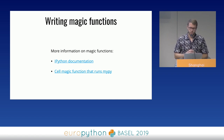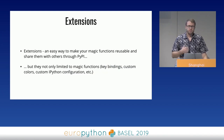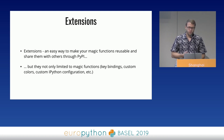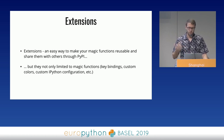Creating cell magic functions is pretty similar, and you can even create a function that works as both cell and line magic. If you want to learn more, the IPython documentation has simple examples, and I also wrote a short step-by-step guide on creating a cell magic that runs the mypy type checker on a block of code. Creating magic functions is easy, but to run our magic function we had to copy and paste code into IPython. If you want to use it often, you'd have to paste it each time you start a new session, which is inconvenient. So we might want to turn our magic function into an extension.